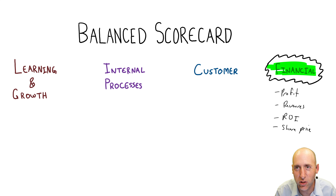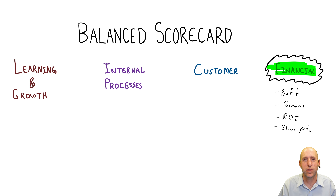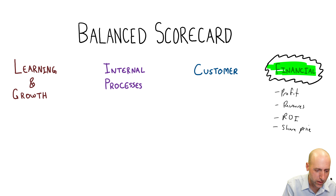When measuring the performance of a company, so often people focus and fixate on the financial. They say if we're making money, we're happy, and if we're not making money, we're sad. So they measure the profit, the revenue — total revenues, whether revenue is growing or shrinking. ROI is a nice example. Share price. We could list financial measures of success for days, and often these are an end in themselves: we want financial success, so we measure it and we chase it.